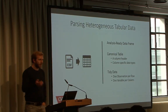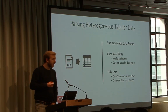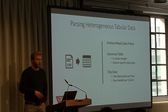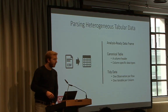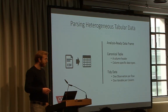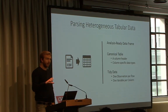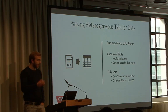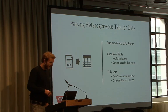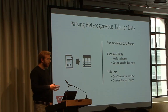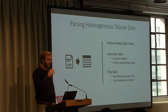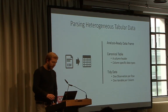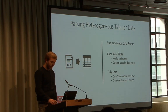What we want to get out of those files in the end is what we call an analysis-ready data frame — what we know in Python or R as a data frame table in a canonical form, which has one header row, column-specific data types, and in the best case contains tidy data, meaning one observation per row and one variable per column.